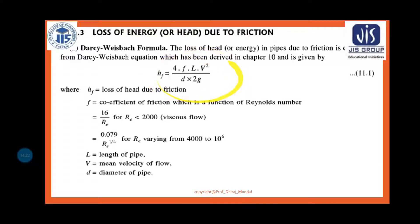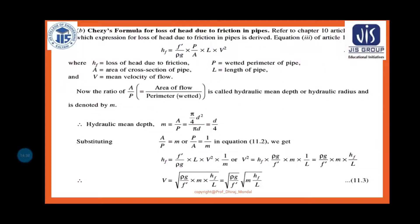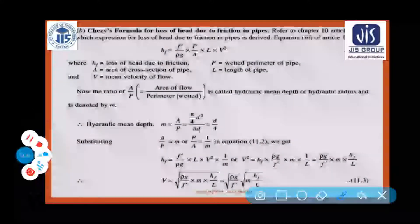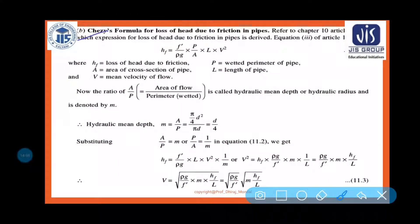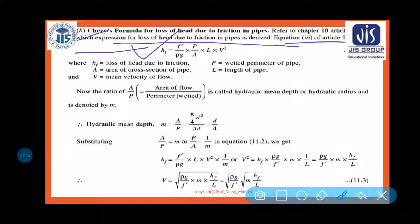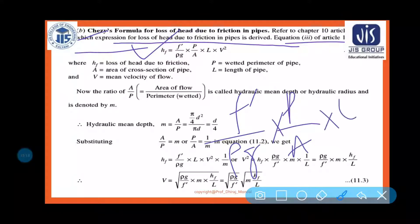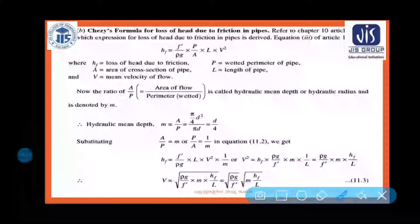So in the formula, all the terminology — f, L, V, ρ, g, D — should be clear. Now let us look at Chezy's formula, which is another way to find major energy losses. From chapter 10, the expression for loss of head due to friction in a pipe is given as hf = f'·P·L·V²/(ρ·g·A), where this derivation is not required.